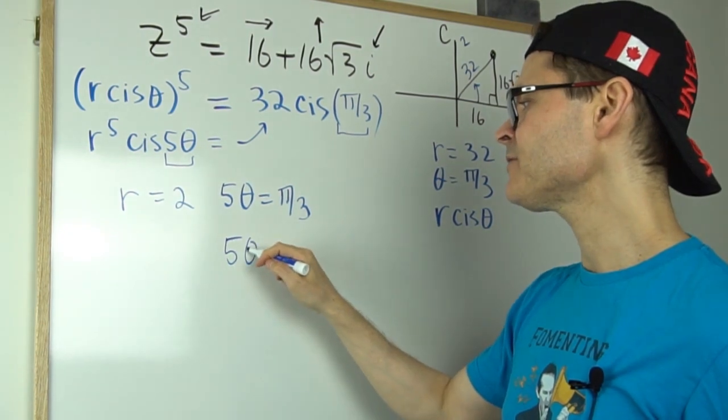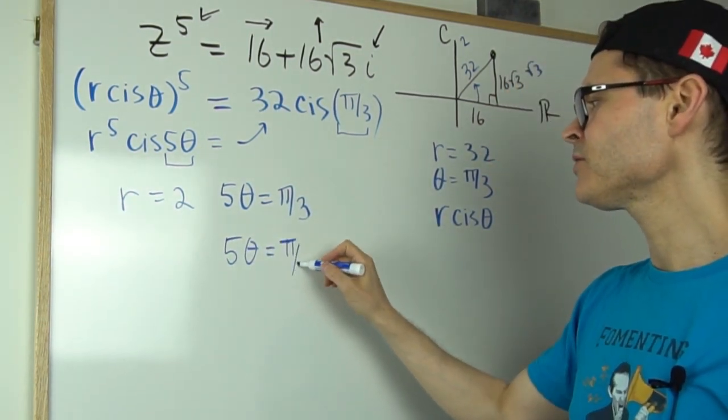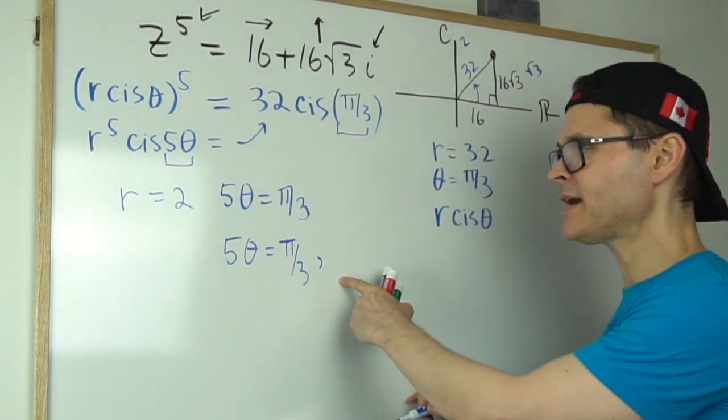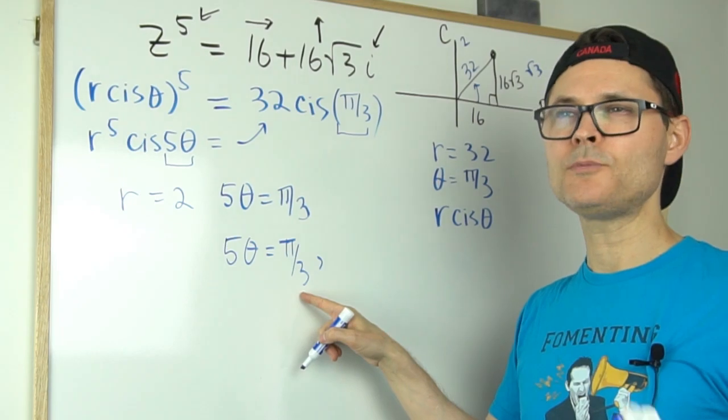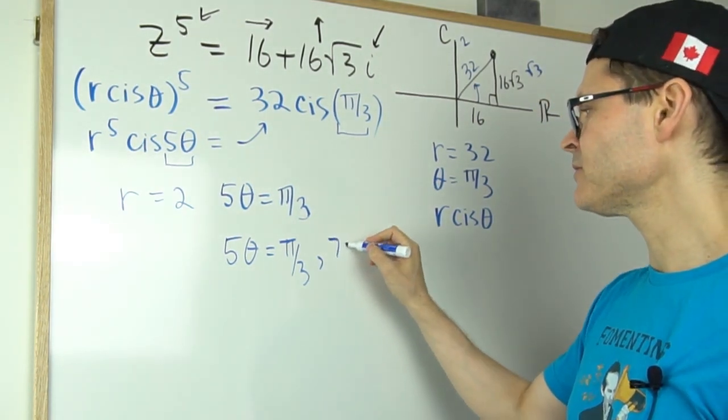So we take 5π. Just leave the 5 there for a second. We'll bring it in a second. And we take π over 3. And then we're also going to generate the next one by adding 2π. Well, 2π is 6 over 3. So 6 over 3 plus 1 over 3 is 7π over 3.